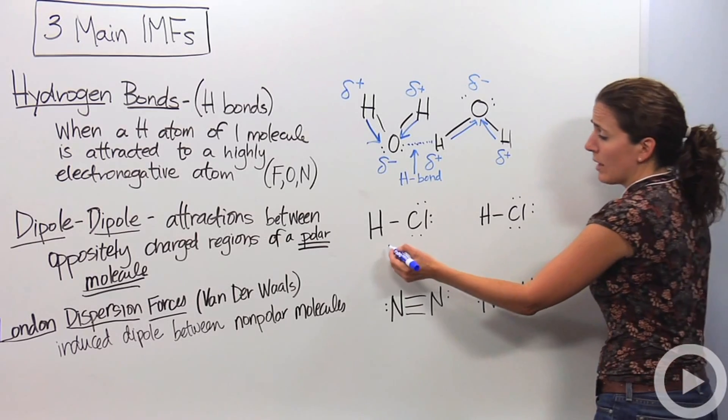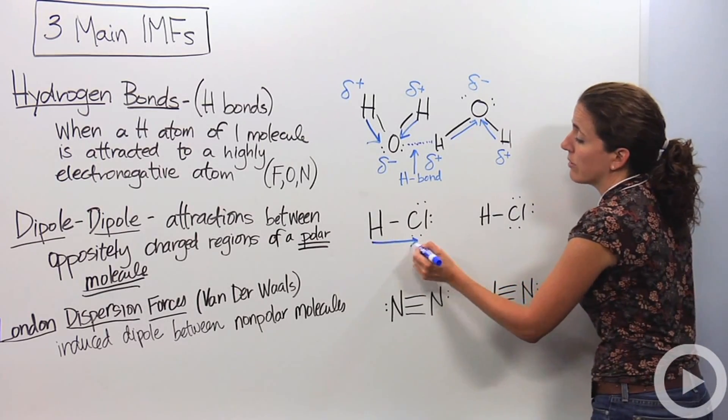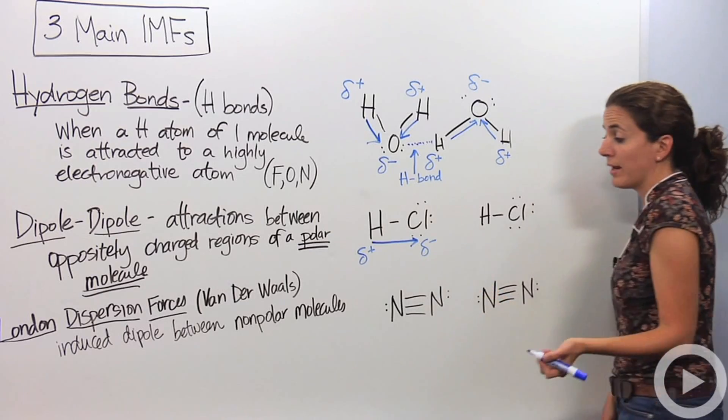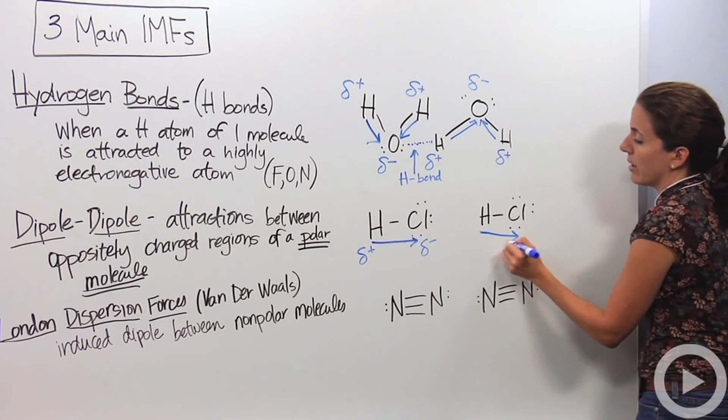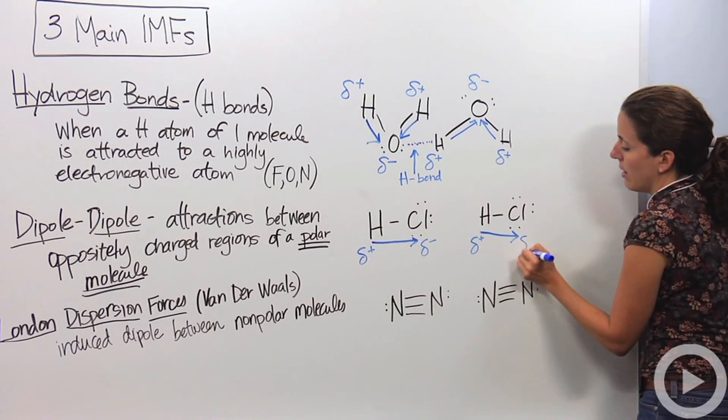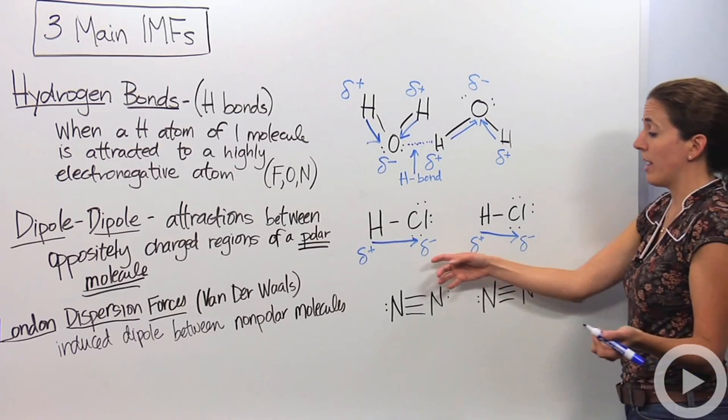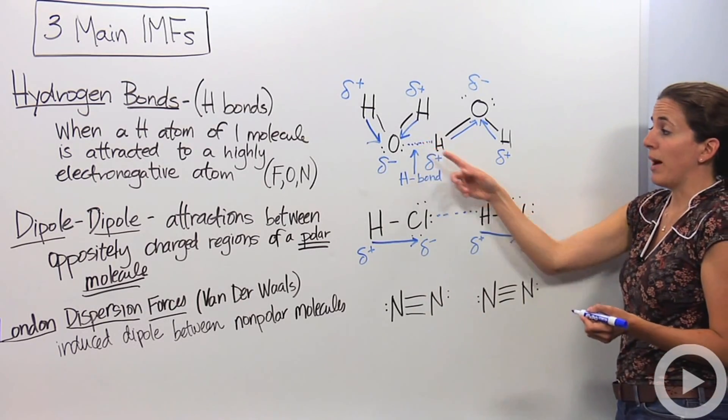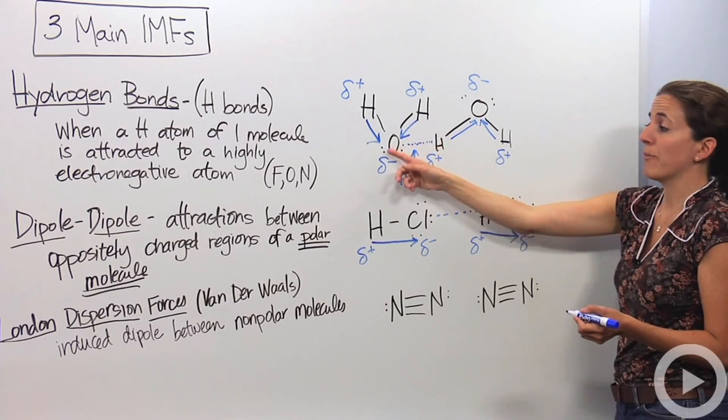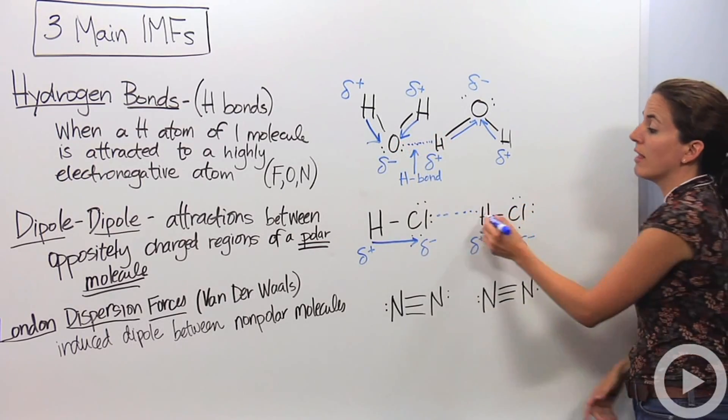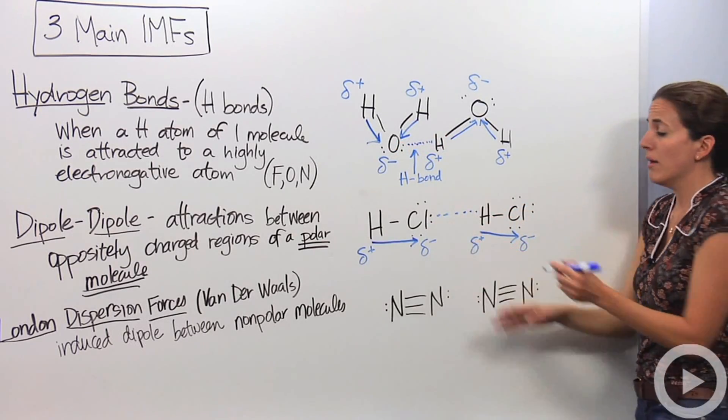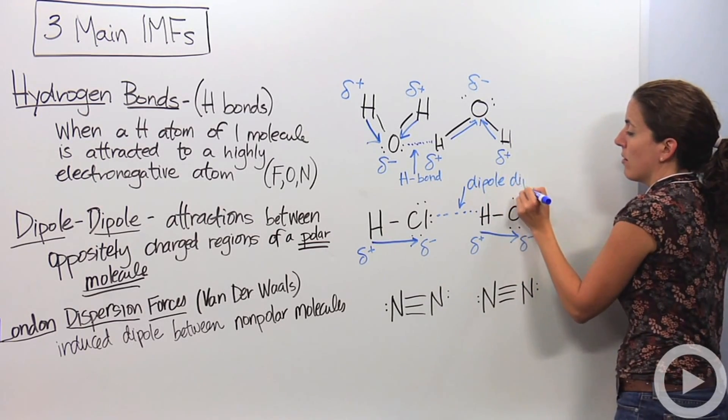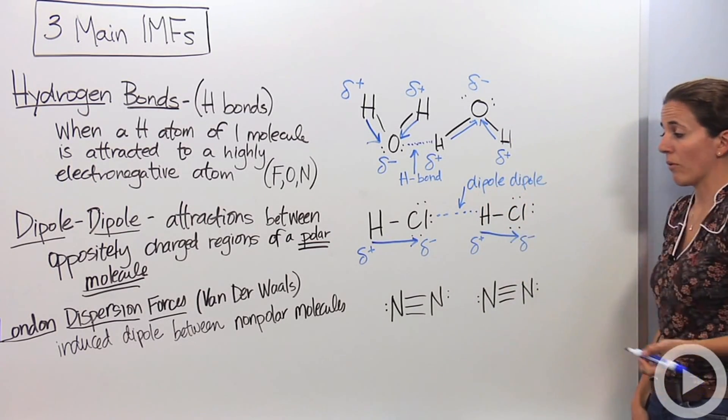So electrons here are going to flow towards the chlorine, making this positive, this negative. Same thing goes over here, making this positive and this negative. And again, we know that negative and positive attract very similarly to hydrogen bond, but these guys are much more different in electronegativity values than these guys. So this is not as strong. So this guy, here is the dipole-dipole interaction.